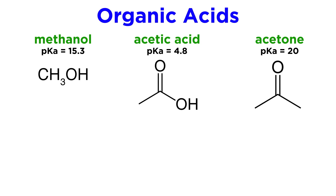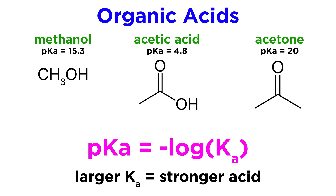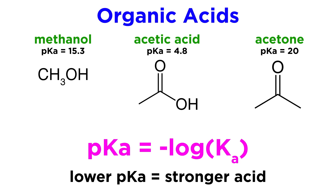Take the following organic compounds — methanol, acetic acid, and acetone — with their pKa values listed. As we recall, pKa is the negative log of the Ka, so while a larger Ka correlates with a stronger acid, as a greater proportion of acid molecules are deprotonating, it is a lower pKa that will correlate with a stronger acid.